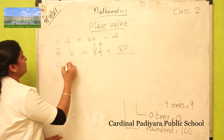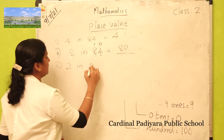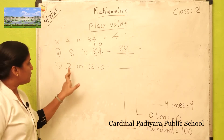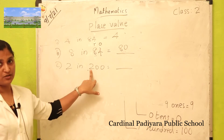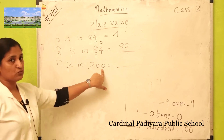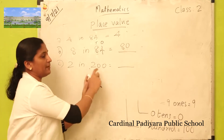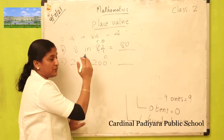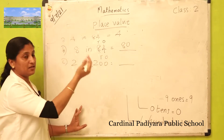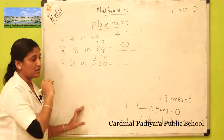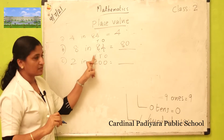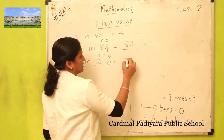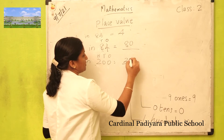Question number C: two in 200. What is the place value of two in two hundred? It's a three-digit number so it has three places — ones, tens, hundreds. How many hundreds? Two hundreds. So the place value of two is two hundred.